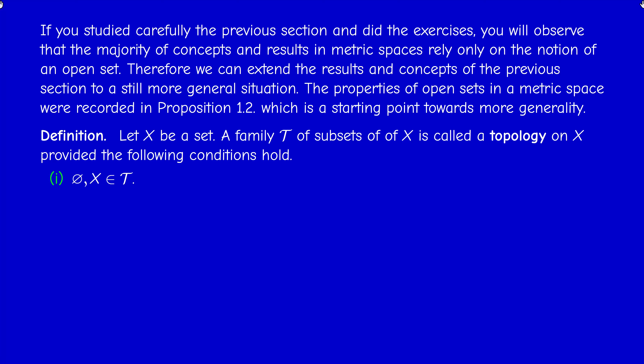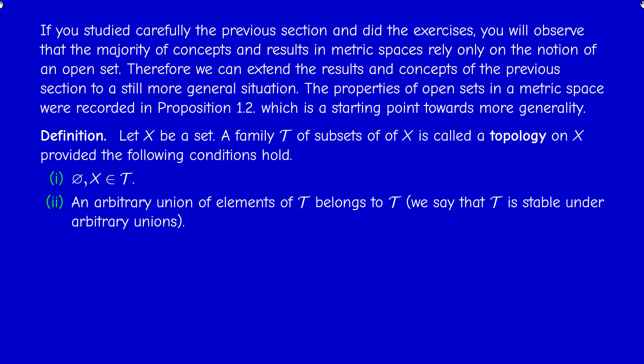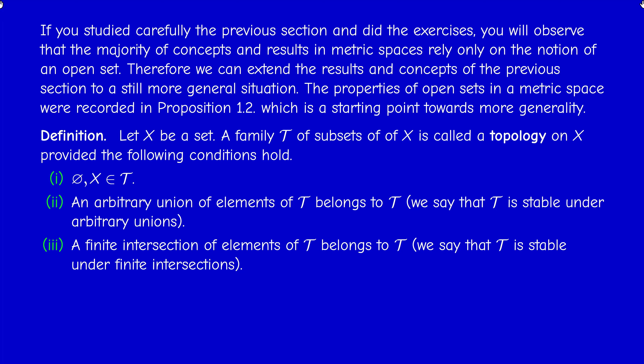The empty set and the whole space belong to the collection of open sets. An arbitrary union of elements of this collection belongs to this collection — we say the collection is stable under arbitrary unions. The intersection of two elements of T belongs to T, which by induction implies that a finite intersection of elements of T belongs to T as well.